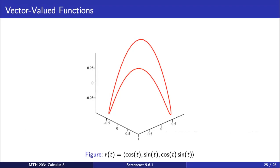As an example of a vector-valued function, the curve we looked at earlier has x component given by cosine of t, y component given by sine of t, and z component given by cosine of t times sine of t.